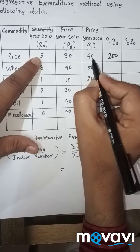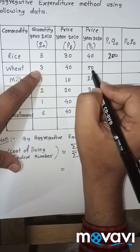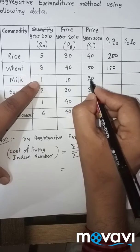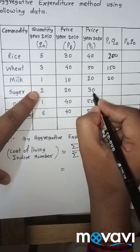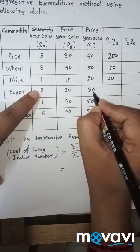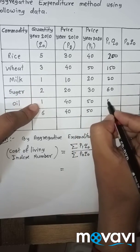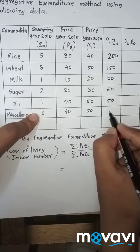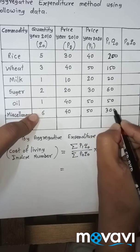P1 is 40, Q0 is 5, so 40 into 5 is 200. Then 50 into 3 is 150. 20 into 1 is 20. 30 into 2 is 60. 50 into 1 is 50. And 50 into 6 is 300.